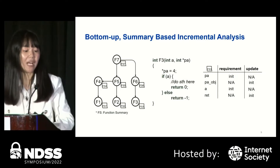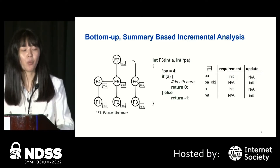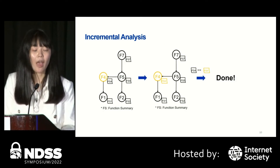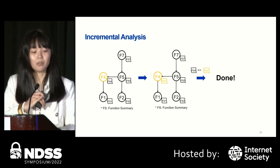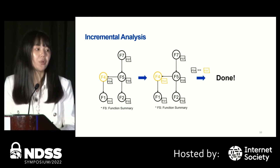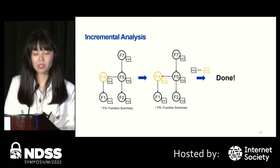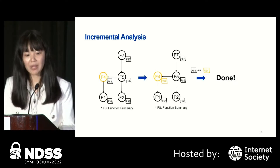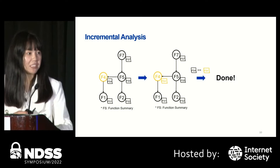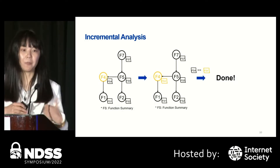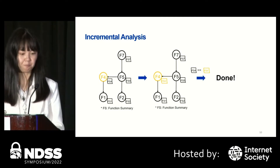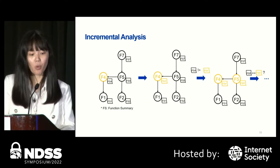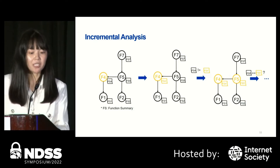After whole-program analysis, we have all function summaries recorded. When new code arrives, we can do incremental analysis. If new code changes function f4, we reanalyze f4 and get a new function summary fs4'. We compare fs4 with fs4'. If they are equal, we are done — instead of redoing the whole program analysis, we only need to analyze one function. If fs4' does not equal fs4, we proceed to analyze the callers until function summaries stop changing.